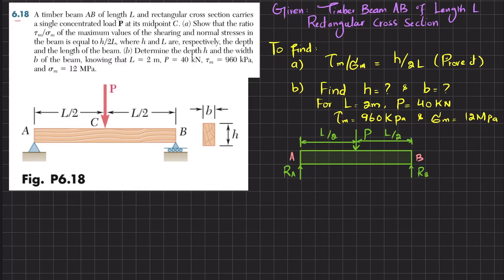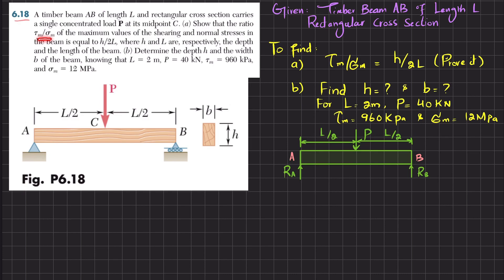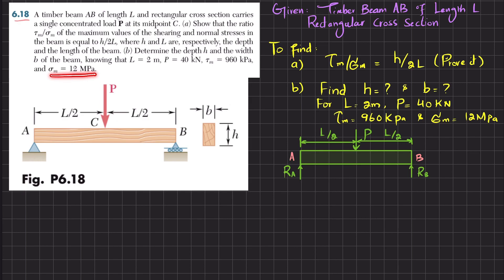Welcome back. Problem 6.18: a timber beam AB of length L with rectangular cross-section carries a single concentrated load P at point C. Show that the ratio of maximum shear stress over maximum bending stress equals H over 2L, where H is the height and L is the length of the beam. You can see the timber beam AB with rectangular cross-section having width B and height H.